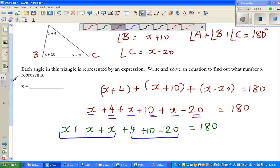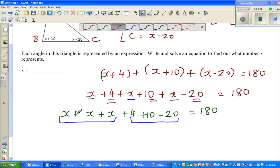So you've got 3 lots of x. x plus x plus x is 3x. Now this you can do 4 plus 10 is 14, take away 20. 14 take away 20 is negative 6. It is equal to 180.